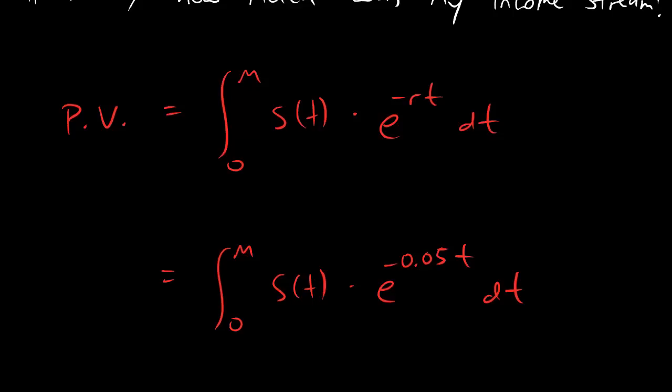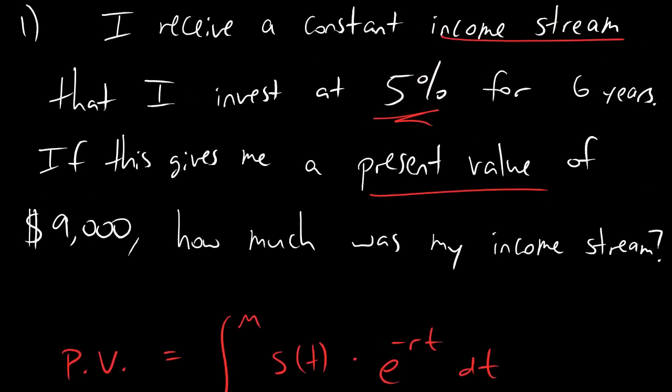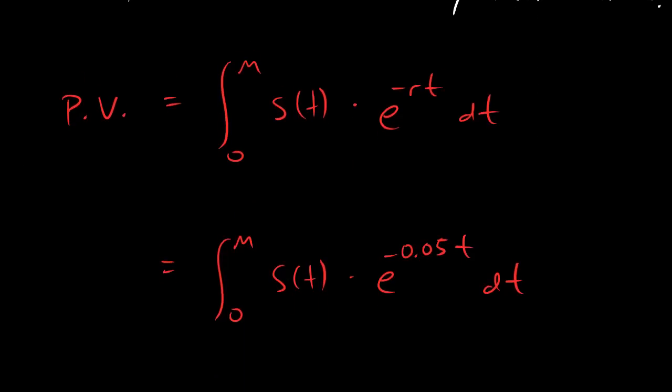Alright, that's cool, and that's just us plugging in 0.05 for the interest rate. Now the other thing we know is that we're going to be investing this for 6 years, and that means my m value is just 6. Bam, look at that. This is getting better all the time.